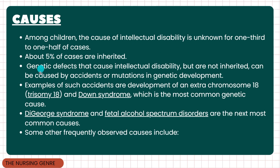The causes of mental retardation among children include: the cause of intellectual disability is unknown for one-third to one-half of cases. About 5% of cases are inherited from parents. Genetic defects that cause intellectual disability but are not inherited can be caused by accidents or mutations in genetic development, such as extra chromosomes leading to Down syndrome.